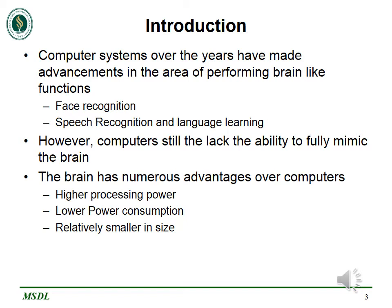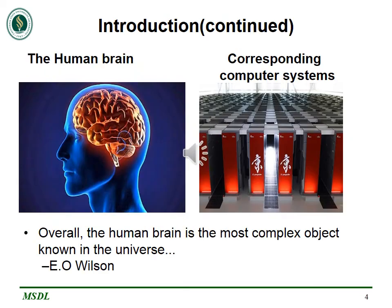On top of that, the brain consumes very low power. When engineers measured the amount of power the brain consumed, they found that the brain consumes just about 20 watts — the energy that a dim light bulb consumes. So upon all the functions the brain performs, the brain is an excellent manager of power. Furthermore, the brain is relatively smaller in size. To put this into perspective, it takes a full room of computers to perform what a human brain can perform.